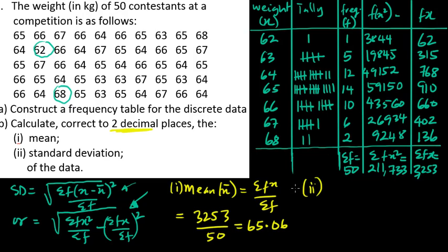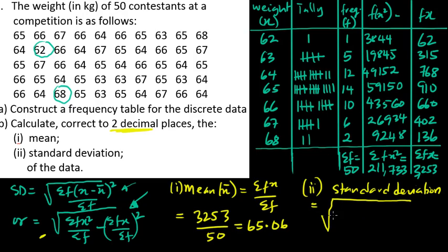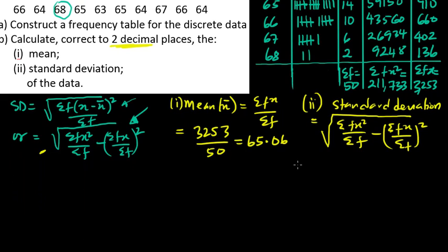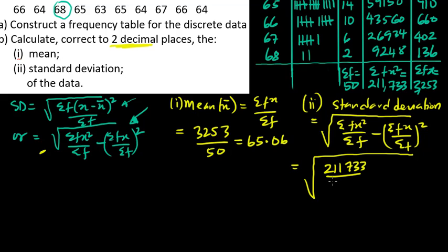For the standard deviation, we use: √(Σfx²/Σf − (Σfx/Σf)²). Substituting: √(211733/50 − (3253/50)²). That gives √(4234.66 − 4232.80).